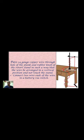Next, pass 24 gauge copper wire through the hole of the plank and rubber knob of the retort stand in such a way that the wire is arranged in a vertical position.